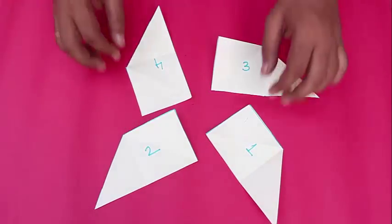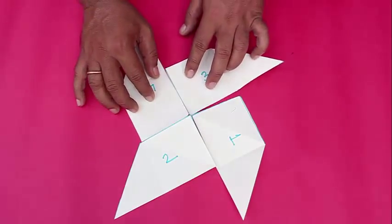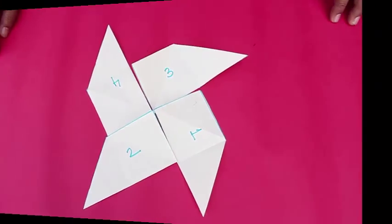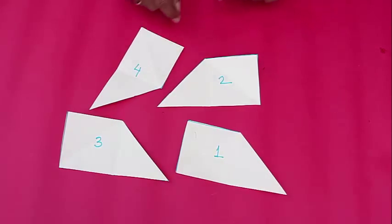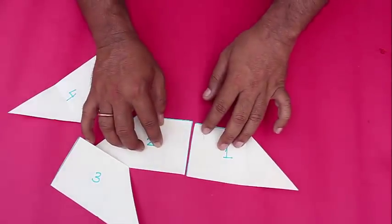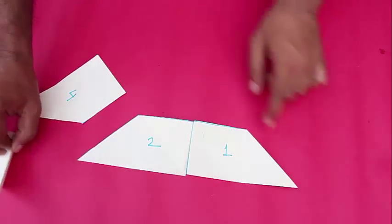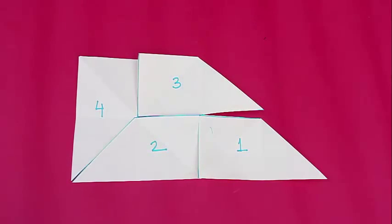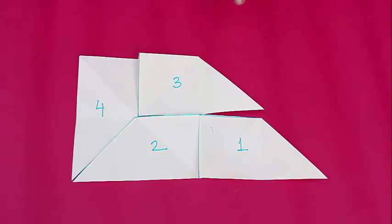You can also put them together and make a sort of a windmill. Another interesting part of the puzzle could be to put all these four pieces back together to make the trapezium, the original trapezium. So enjoy this wonderful trapezium carpenter's puzzle.